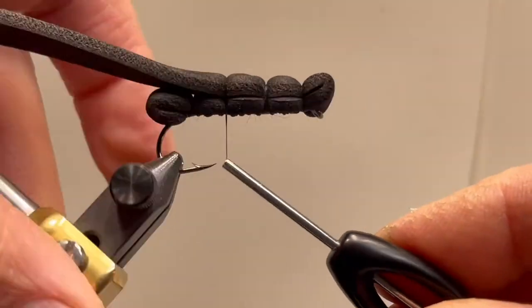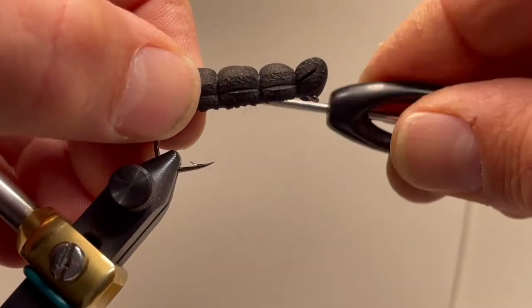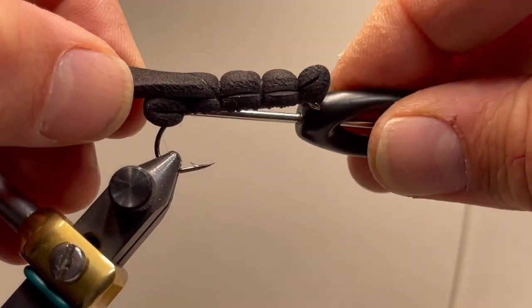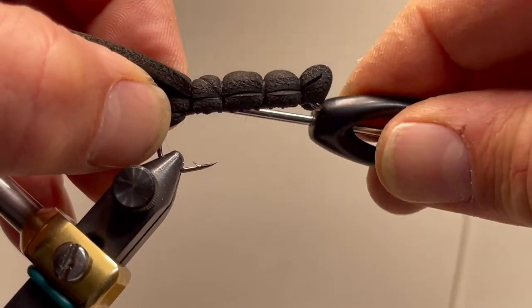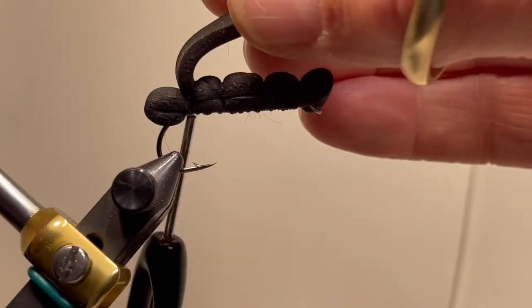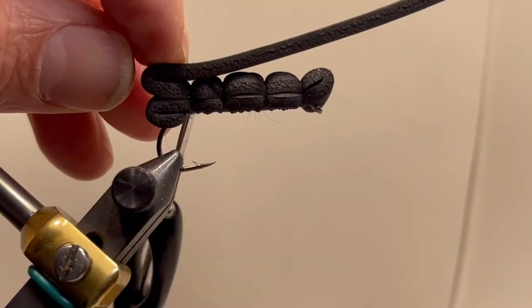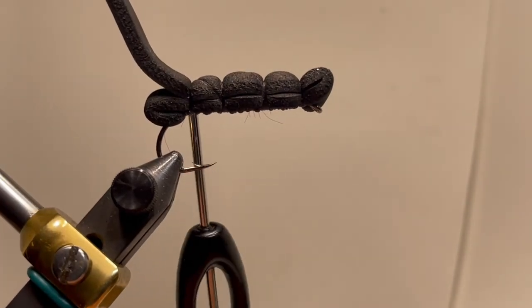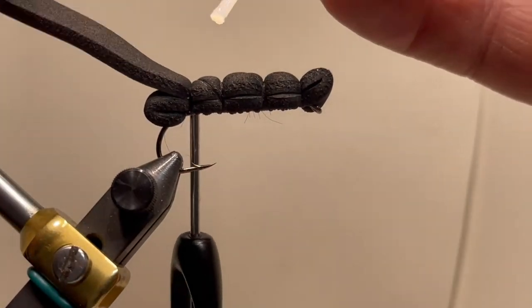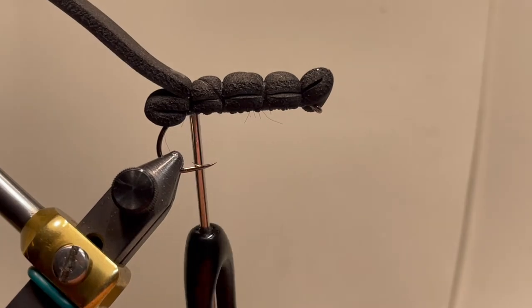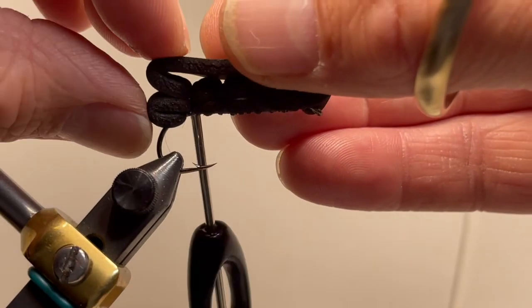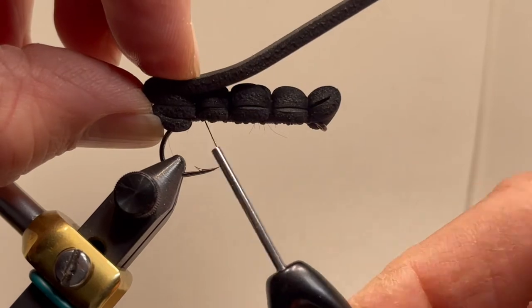Secure that in place. One more wrap back and secure that down. And then we're going to fold it over again. At this time, you might want to use a little bit of zap-a-gap. This fly is a series of foam, rubber legs, and lots of glue. Zap that down.